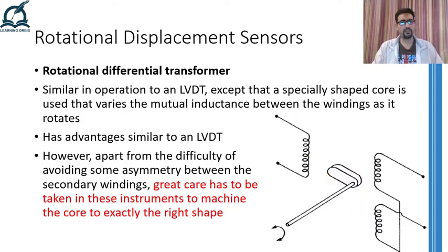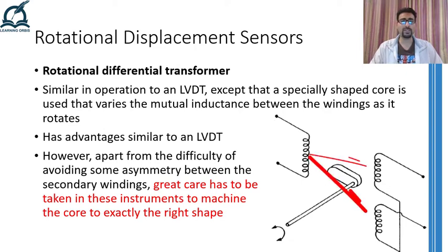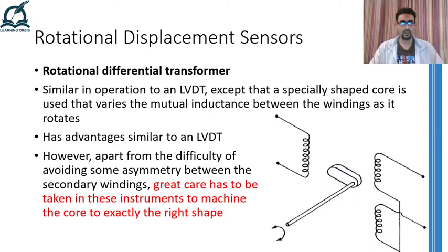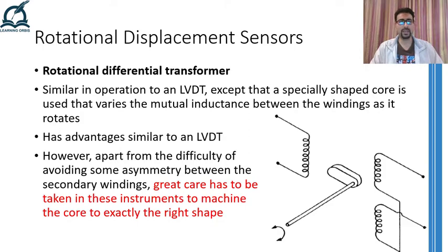On the contrary, if the core is rotated counterclockwise, the magnetic flux linkage between the primary and the lower secondary side increases, giving an increased voltage output but with a different phase. The mathematics involved are exactly similar to those of LVDTs, which were explained in detail in the referenced video. Great care should be taken while manufacturing the core, as the physical construction is very important. Such rotational displacement sensors are used for measuring rotational motion of plus or minus 60 degrees only.